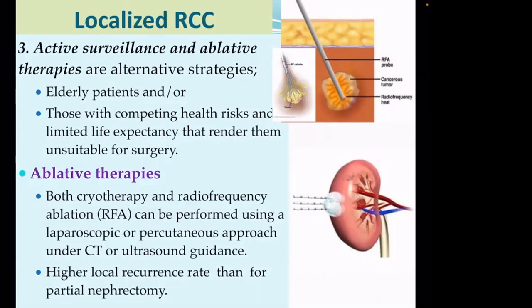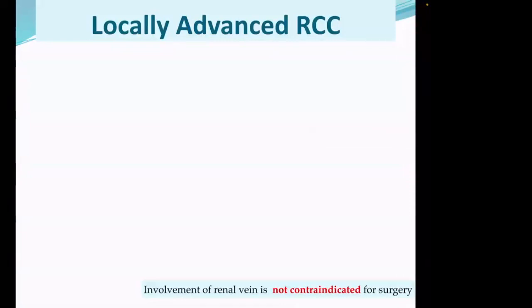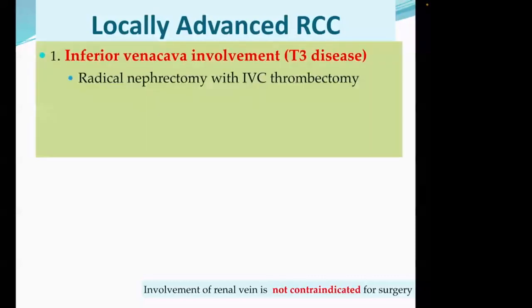Summary for localized RCC: we have three options. The best one is radical nephrectomy. We have the option of nephron sparing surgery or partial nephrectomy, which is applicable for selected patients. And we have active surveillance and ablative techniques for very selective patients. For locally advanced RCC: locally advanced means the cancer has involved surrounding structures including the vein. Once it goes to the renal vein or inferior vena cava (T3/T4), we say it is locally advanced.